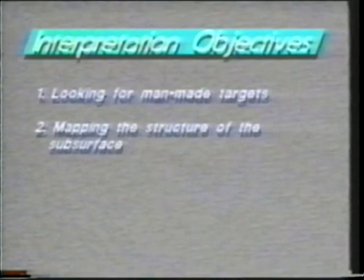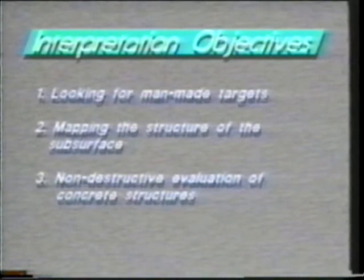Let's divide interpretation into three general objectives. First, looking for man-made targets. Second, mapping the structure of the subsurface. Third, non-destructive evaluation of concrete structures. A cylindrical target such as a pipe, tank, or drum will produce a distinct hyperbolic response due to its shape — this is the first characteristic to look for in the data. The strength of the hyperbolic reflection depends upon the material. Water-filled PVC or metal targets produce strong reflections, while air-filled PVC and concrete targets typically produce weaker reflections.